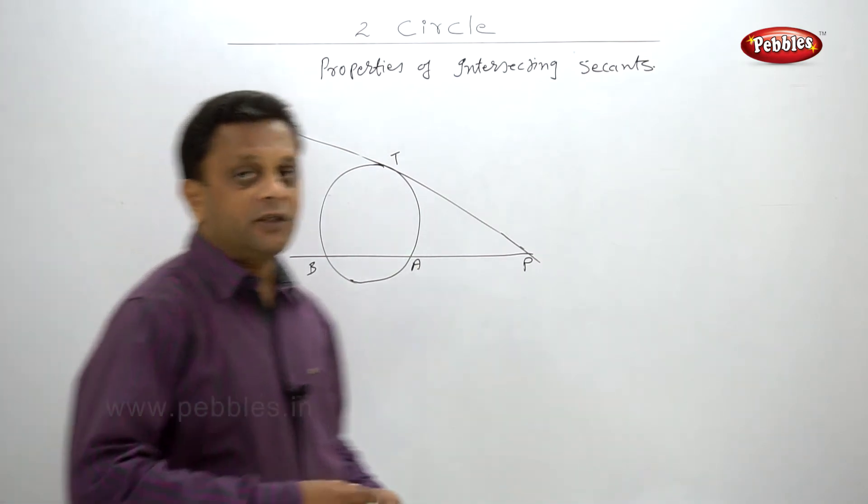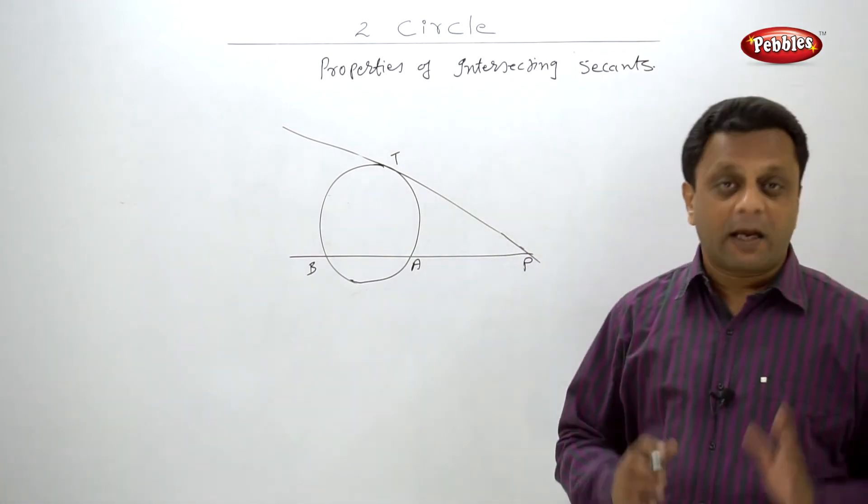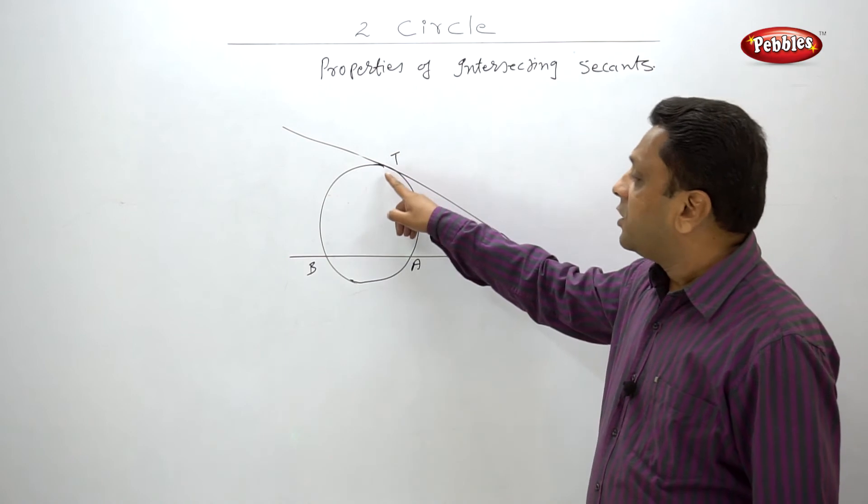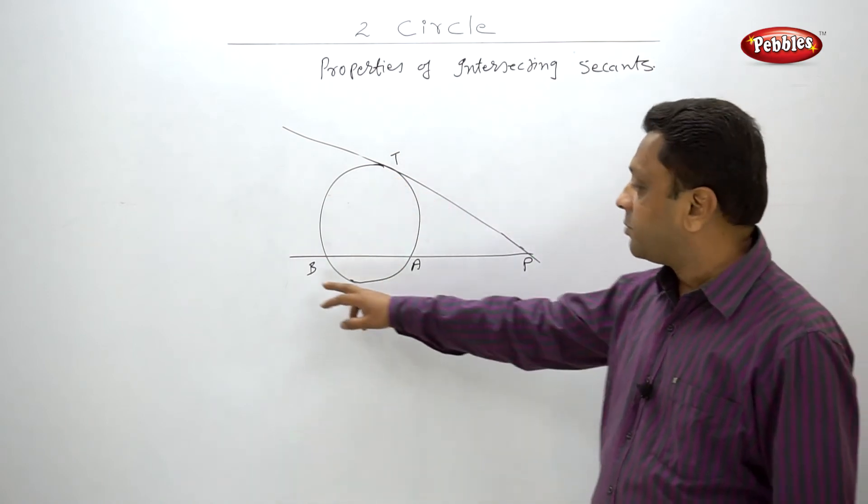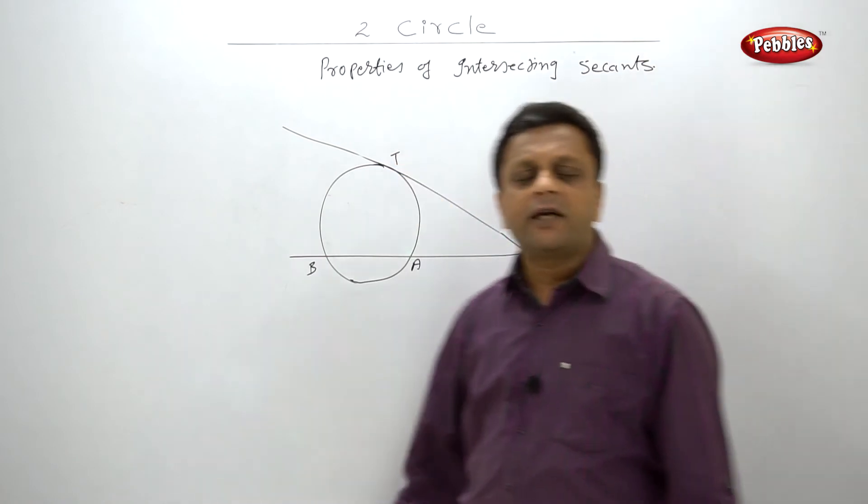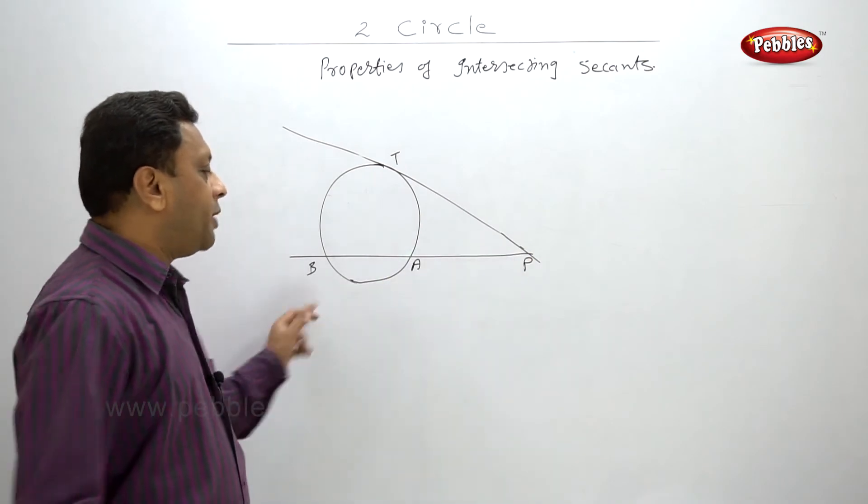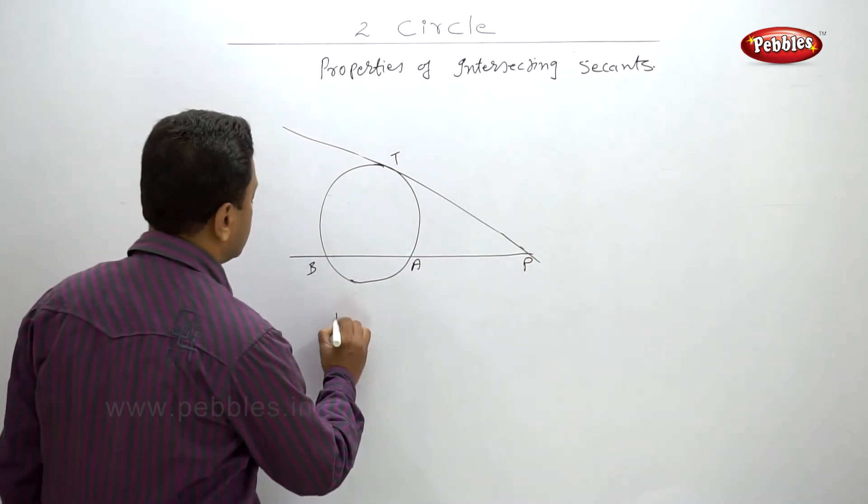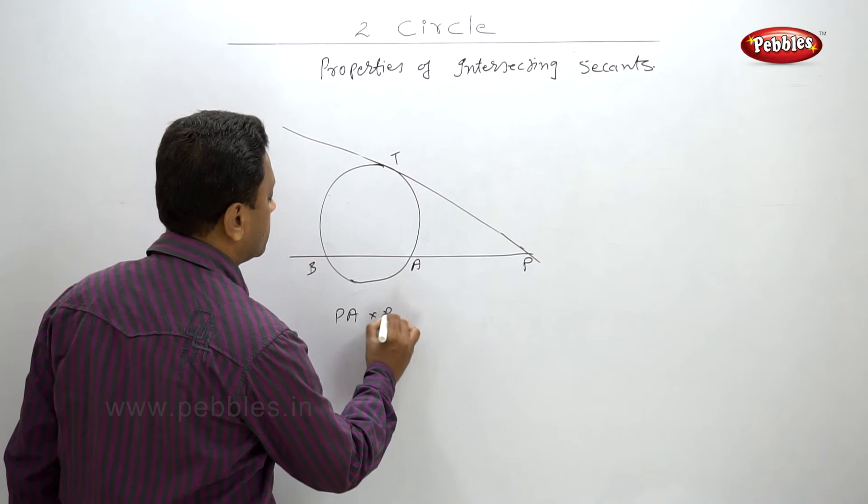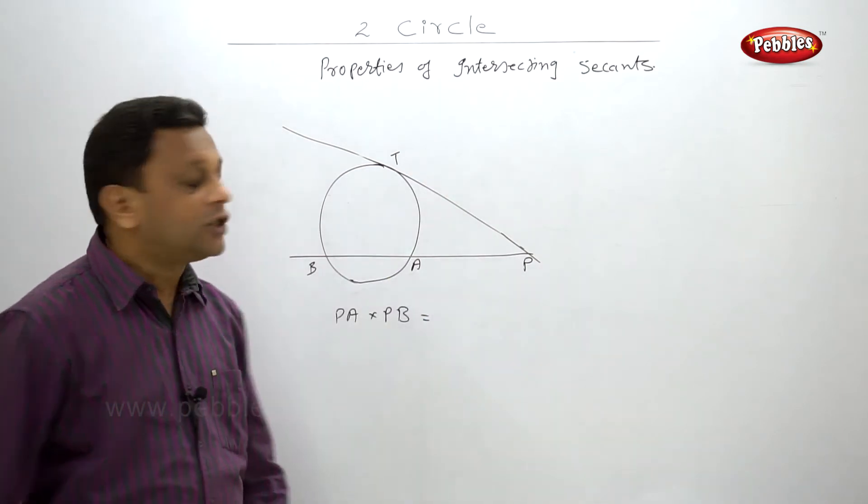Exactly same formula will be applied, but in this case there are no two separate segments. For example here BA and AP are there, but here only TP is there, so we can take TP two times. So what we can say: PA into PB is equal to TP into TP, that is TP square.